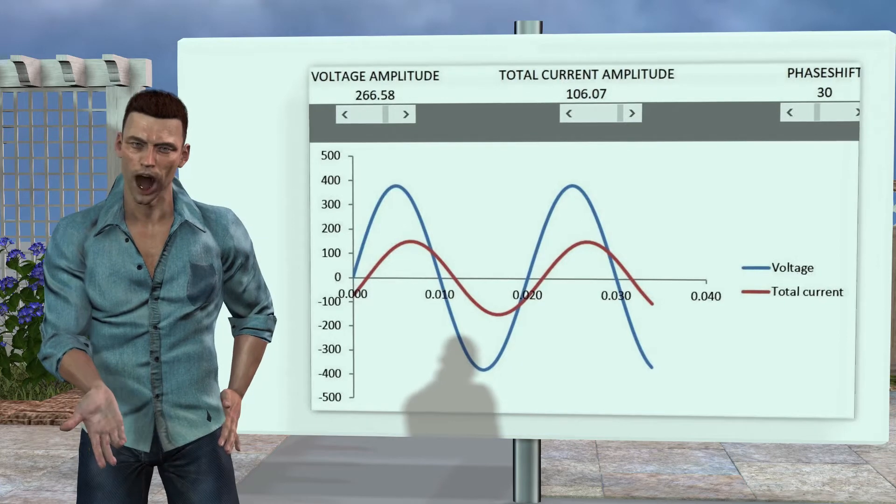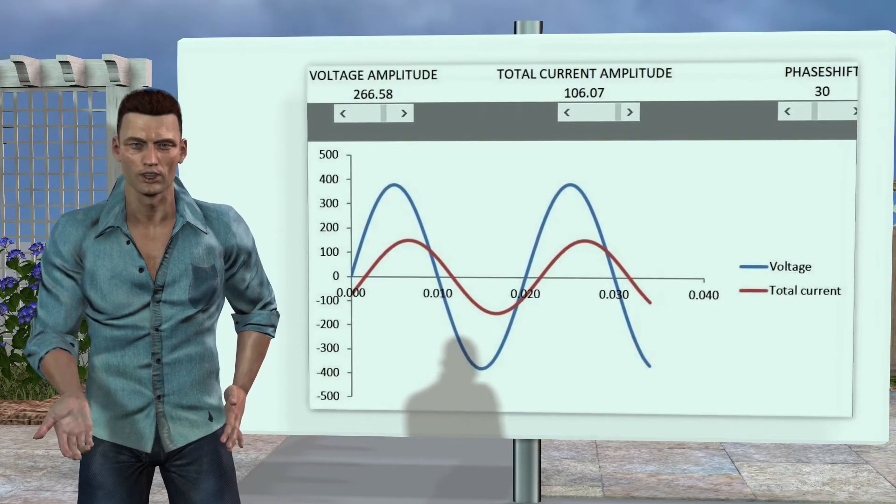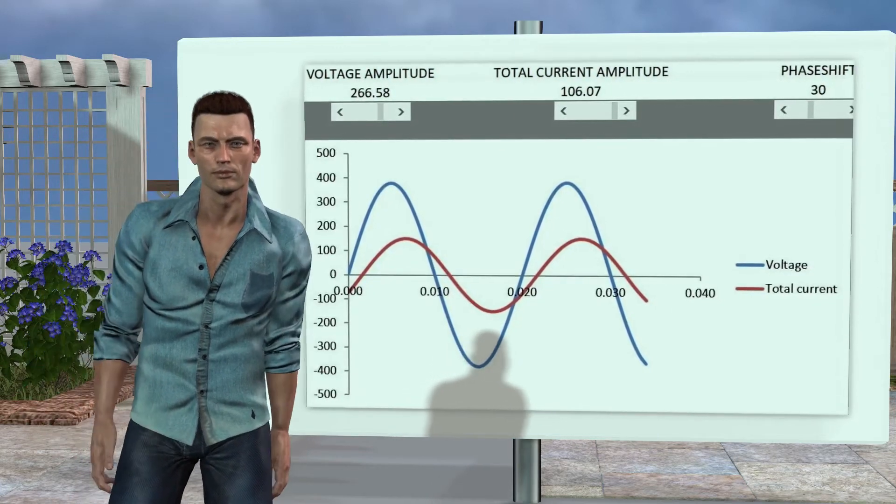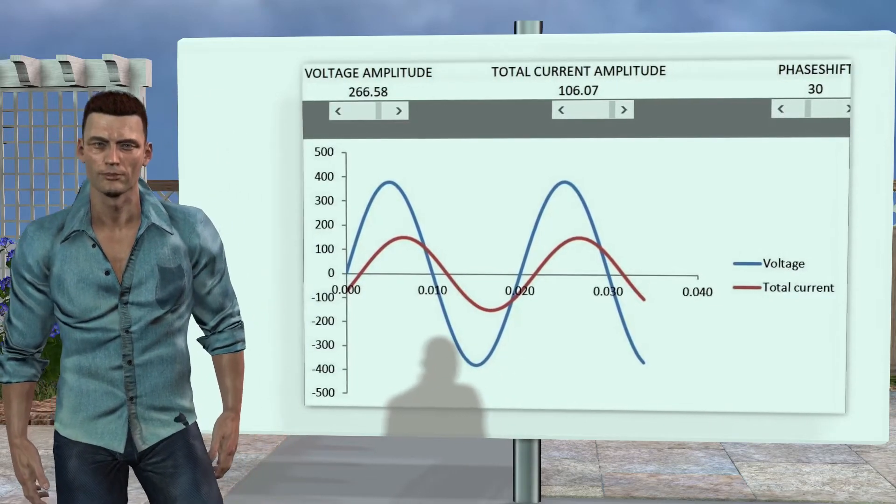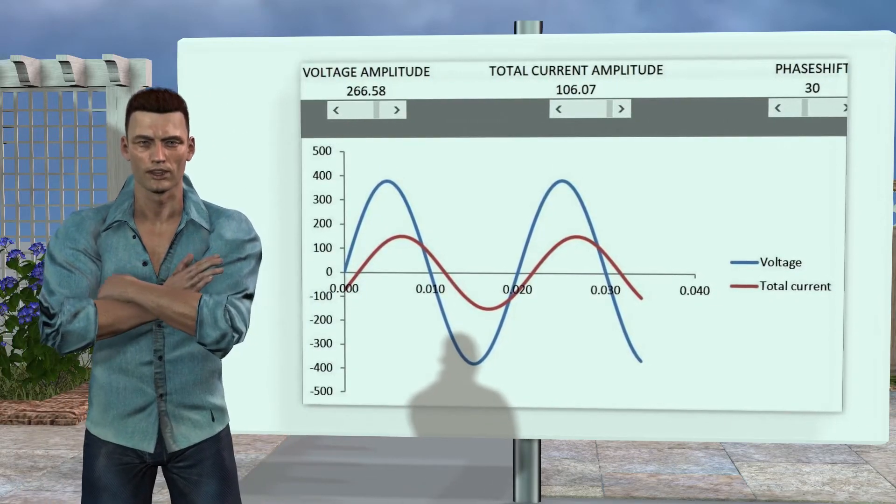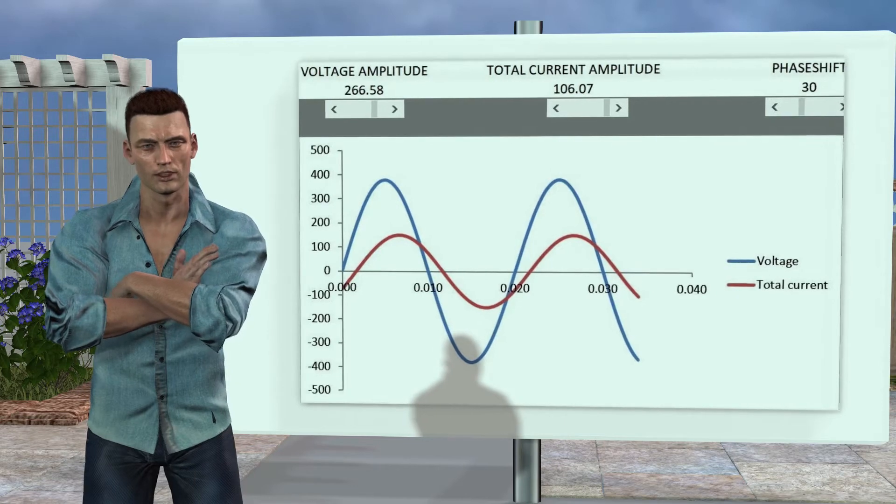Now the zero crossings and maximum values do not match each other. In the graph on the left, we see the waveforms of the voltage and current that an oscilloscope could display.